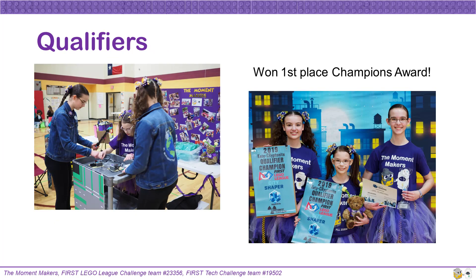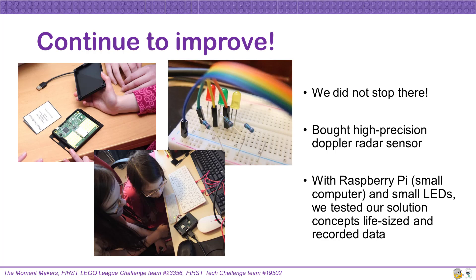In early December, we attended our qualifier tournament and were able to share our project work with the judges and other teams. We were so excited to win the first place Champions Award and a ticket to the regional championship. Even though we already had a functional prototype, we did not stop there. After our qualifier, we continued to work on improving our innovation project. We bought a high-precision Doppler radar sensor and a Raspberry Pi small computer in preparation to build a life-sized working prototype of the sign and radar.